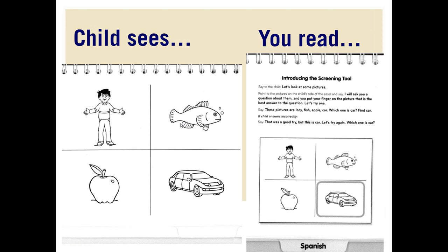Ask the child to point to the best answer. If the child does not understand how to answer, you may re-read the text and help them answer — but only for the sample question. When you are confident that the child understands what to do, proceed to the test. Read the statement on the top of the page exactly as written. The child needs to point to their answer, and you circle on your clipboard a one or a zero.